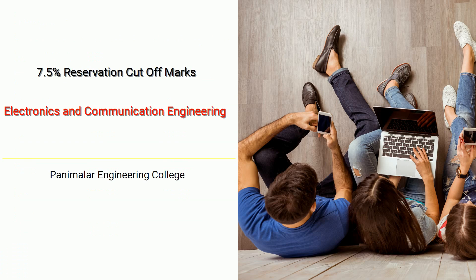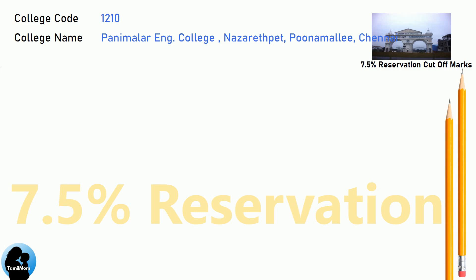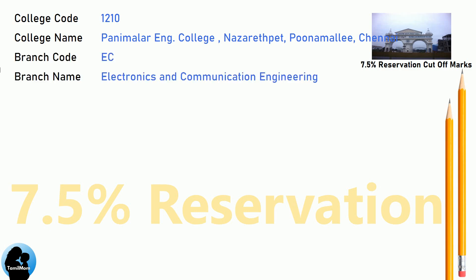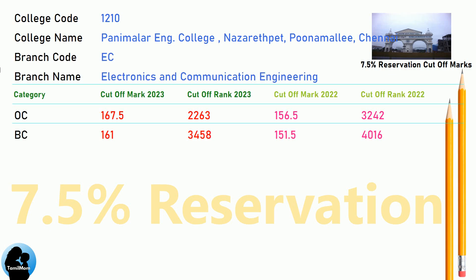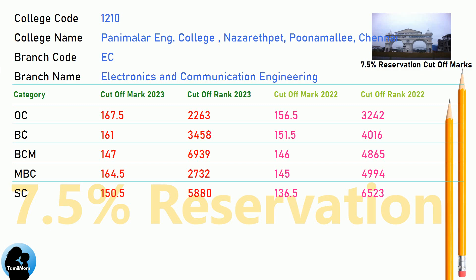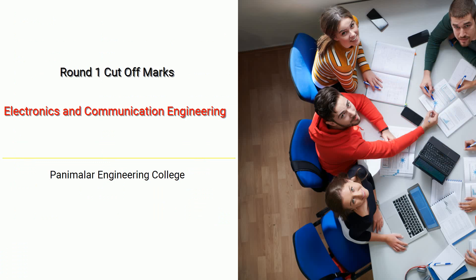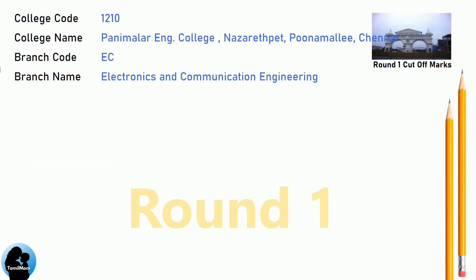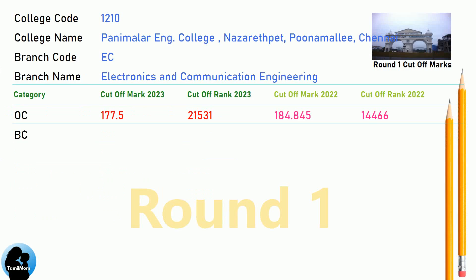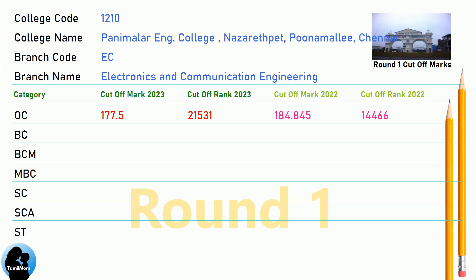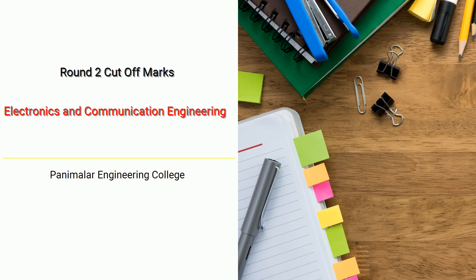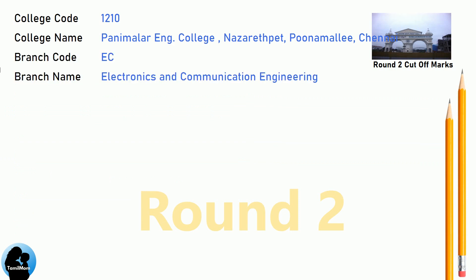DNA 7.5 Reservation Cut-off for Panimalar Engineering College in Electronics and Communication Engineering. DNA 8.5 Reservation Cut-off for Panimalar Engineering College in Electronics and Communication Engineering. DNA 9.5 Reservation Cut-off for Panimalar Engineering College in Electronics and Communication Engineering. DNA 10.5 Reservation Cut-off for Panimalar Engineering College in Electronics and Communication Engineering.